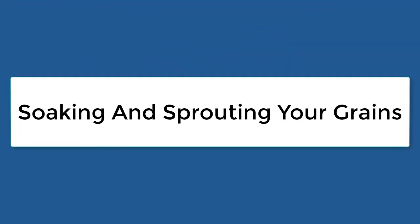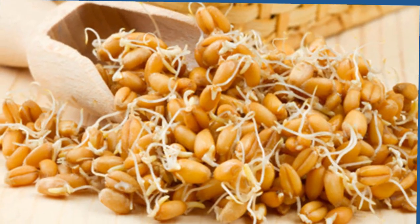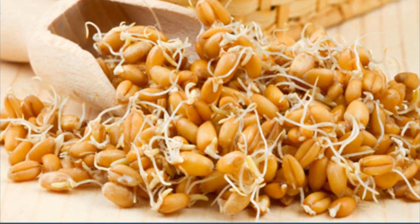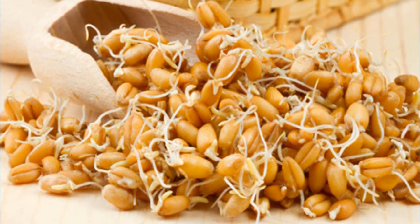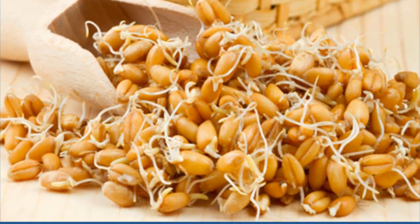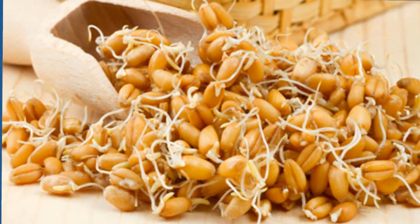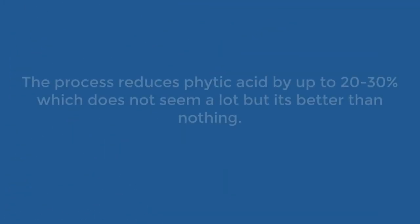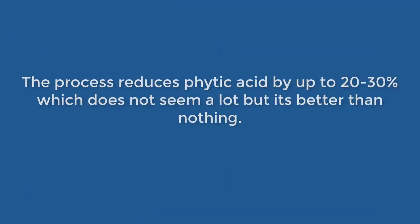Soaking and sprouting your grains. Sprouting is a good first step in trying to reduce phytic acid — it's basically germinating the seeds, grains, or nuts. The process reduces phytic acid by up to 20-30%, which does not seem a lot, but it's better than nothing.